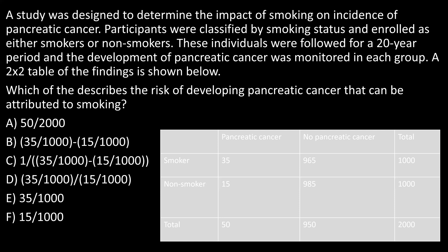That's not the focus of this question, but it will help you answer it. The question asks which of the following describes the risk of developing pancreatic cancer that can be attributed to smoking. What they're asking for is another word for attributable risk. Now you know it's a cohort study and they want you to figure out the attributable risk. So let's go through each answer choice and work toward the answer.